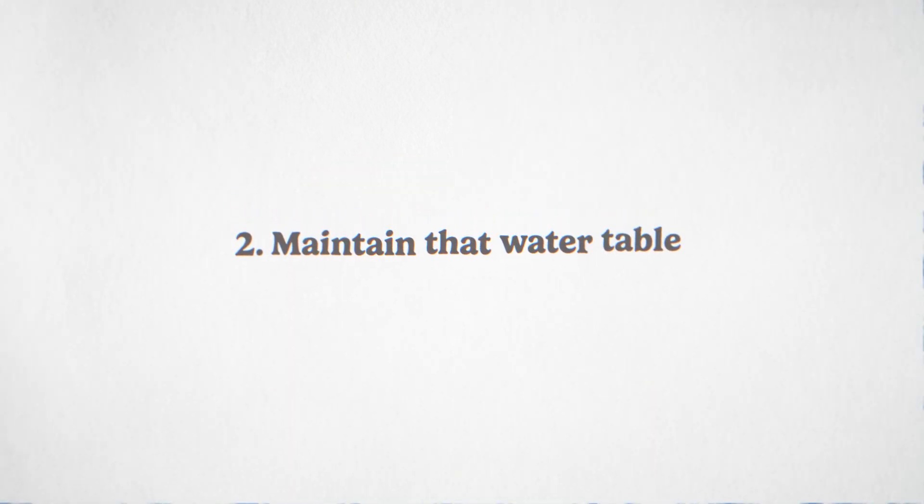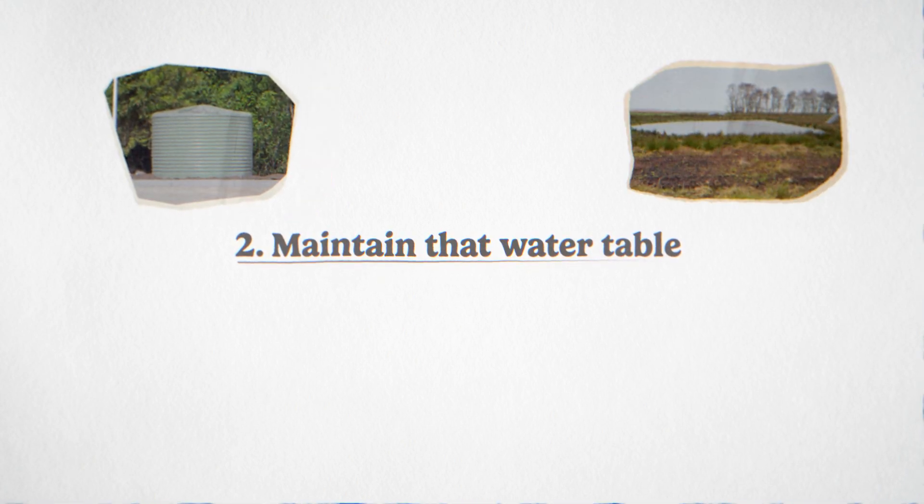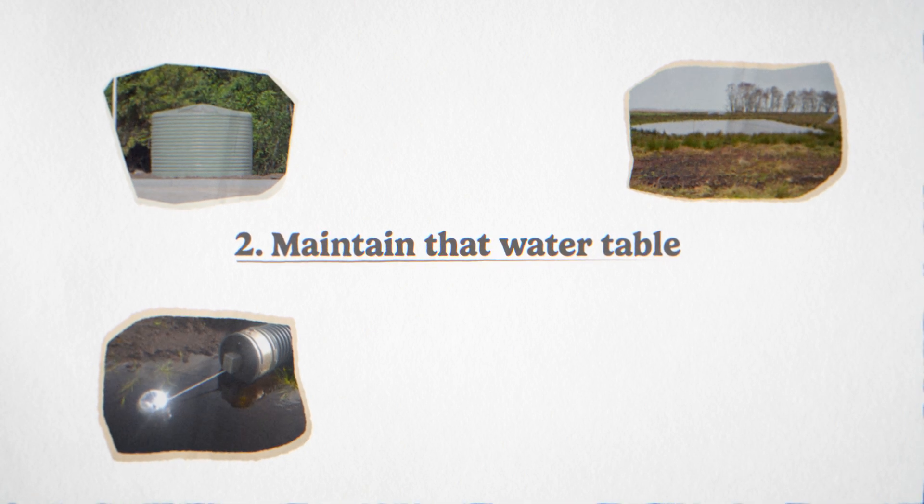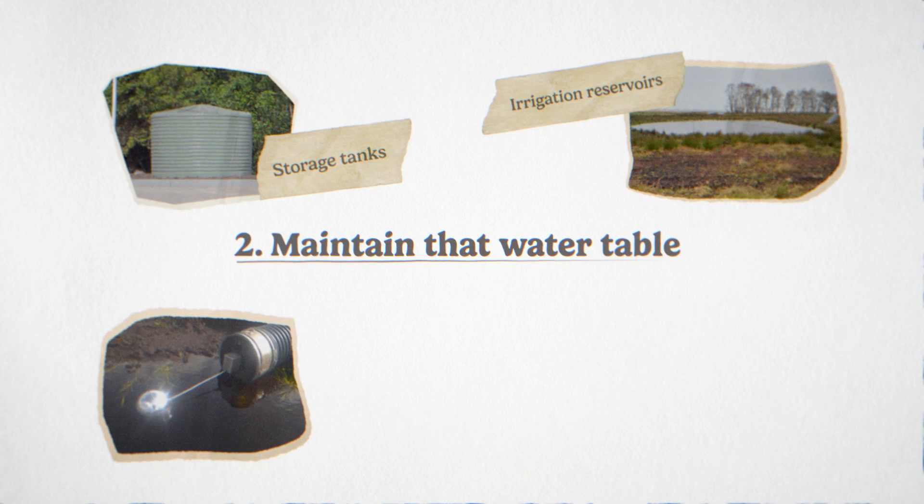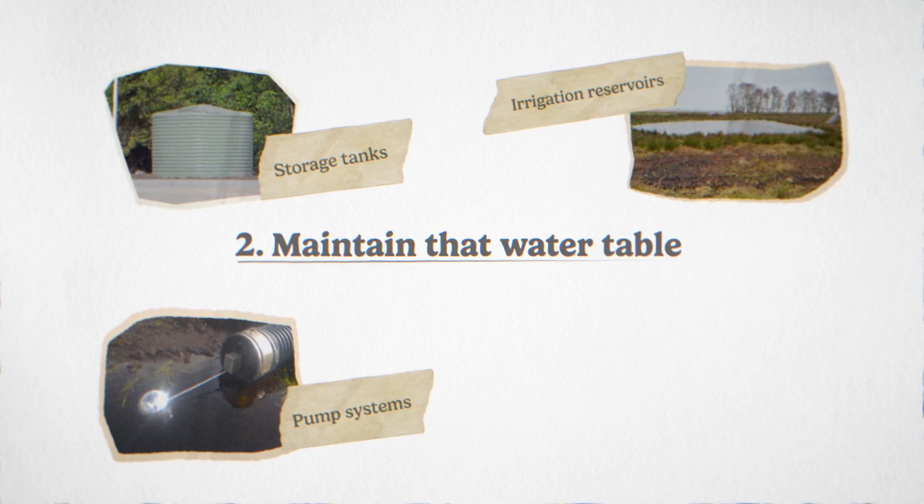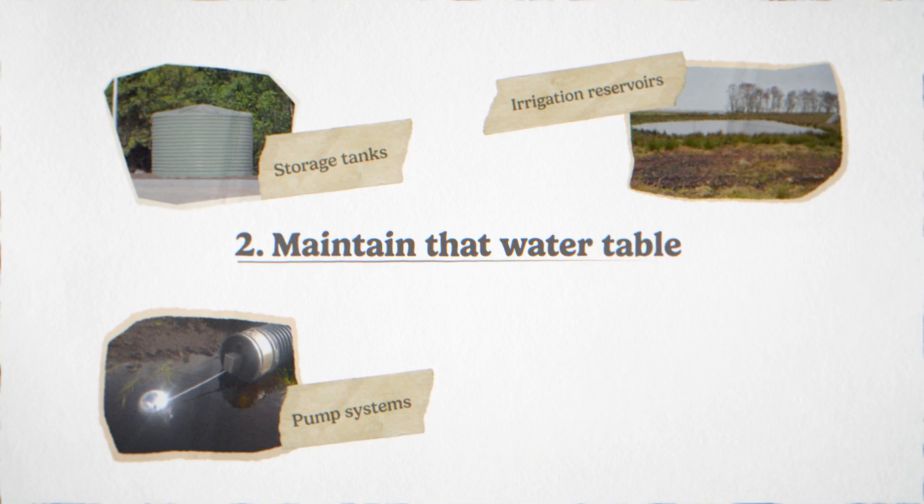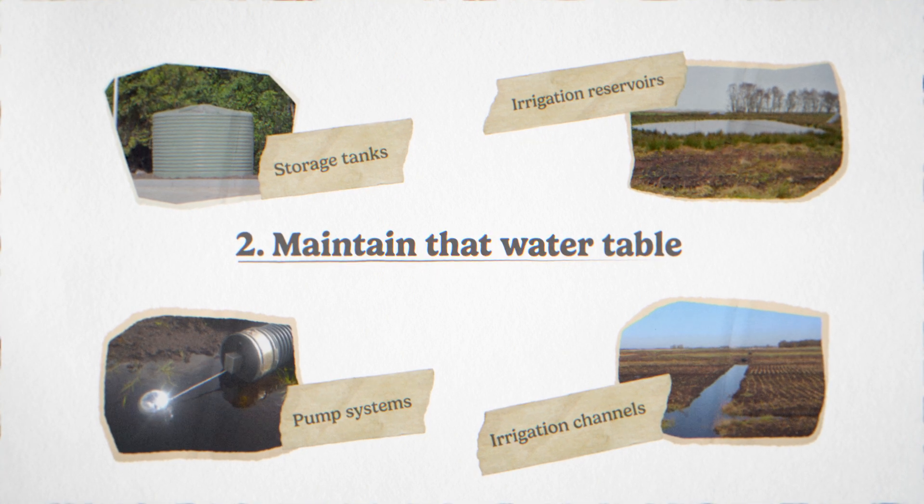Maintain that water table. To maintain a higher water table, you'll need to consider how and where to store water on site, as well as how to move it around your fields. Storage tanks, pond or irrigation reservoirs and pump systems are all methods worth exploring. Remember that new water storage may require consent from the EA. Irrigation channels can be an option for moving water to where it's needed.